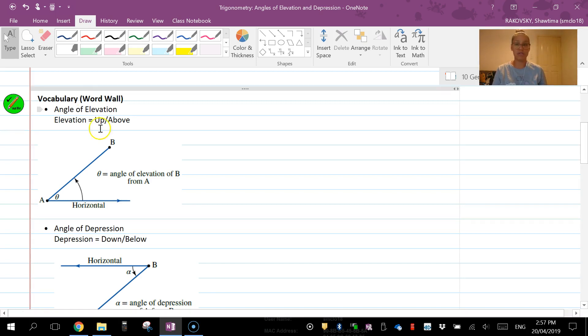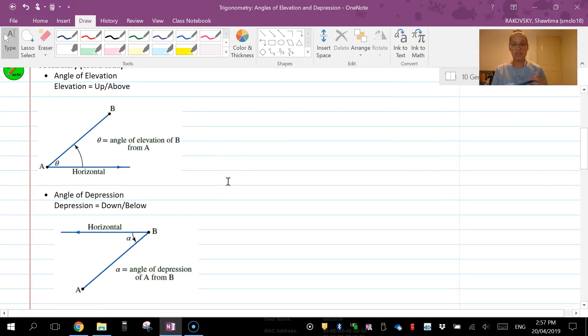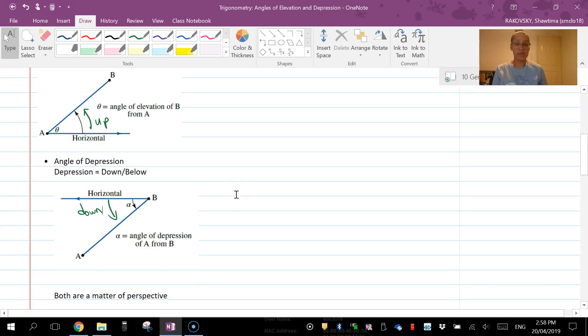Think of it as you're moving up. And then conversely, the angles of depression are going down, so depression down below. It's going from the angle of depression of A from B.